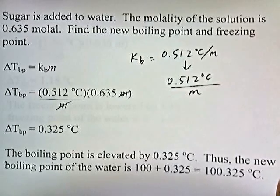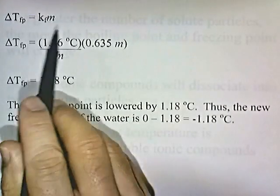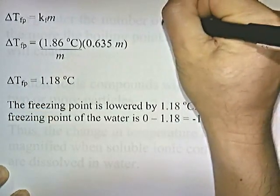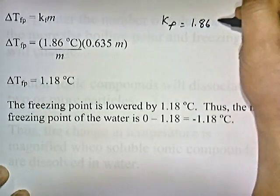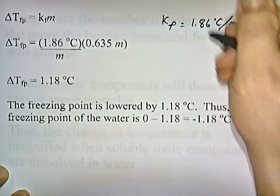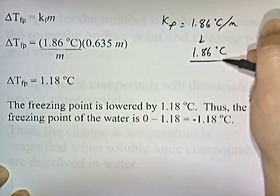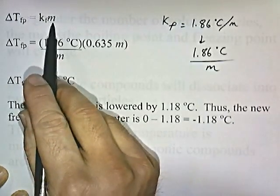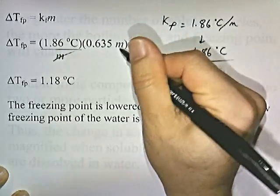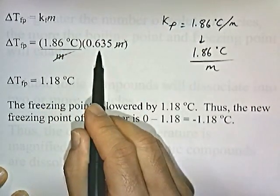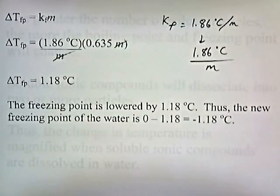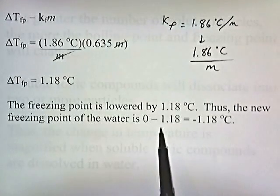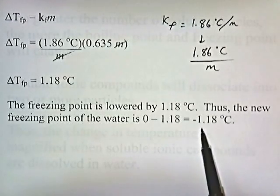If we add sugar to water, how much does the freezing point go down? We use the formula: change in temperature of the freezing point is KF times m. KF is 1.86 degrees Celsius per molal. The molality is 0.635, so the molalities cancel. 1.86 times 0.635 gives us 1.18 degrees Celsius — that's the change in the freezing point. The freezing point is lowered by 1.18 degrees Celsius. Thus, the new freezing point is 0 minus 1.18, so the water freezes at negative 1.18 degrees Celsius.